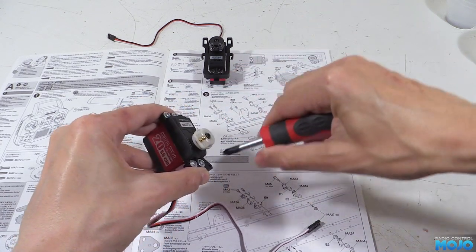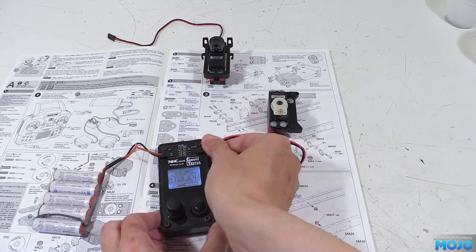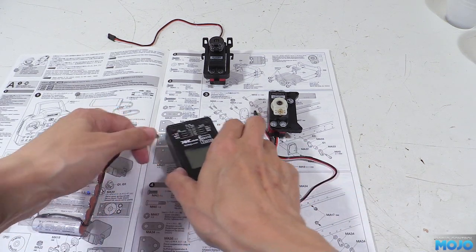All that's left is to power up the servo again and re-center it. Nice and simple and both servos are ready to fit to the chassis once we've built it.